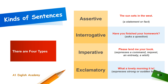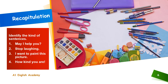The next is interrogative — these sentences ask a question. See the example: 'Have you finished your homework?' and at the end we put a question mark. Next is imperative — imperative sentences express a command, request, entreaty, or a wish. See the example: 'Please lend me your book.' This is a request, so this sentence comes under imperative sentences. And the last is exclamatory — that expresses a strong or sudden feeling. See the example: 'What a lovely morning it is!' This is a sudden reaction, and at the end of such sentences we put an exclamation mark.